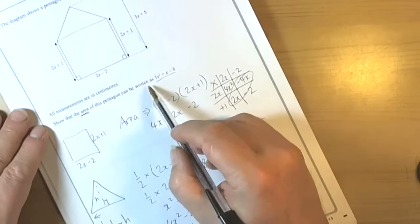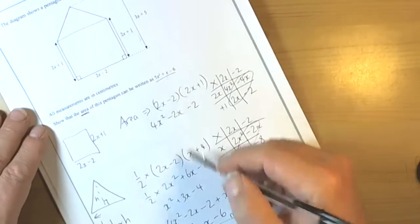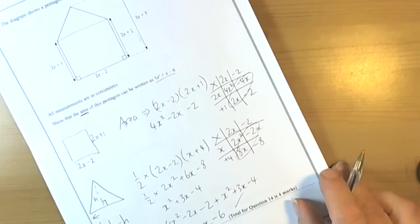So a quick check, they wanted 5x squared, yep, plus x, yep, negative 6, yep, so we'll be quite happy that that's been done.